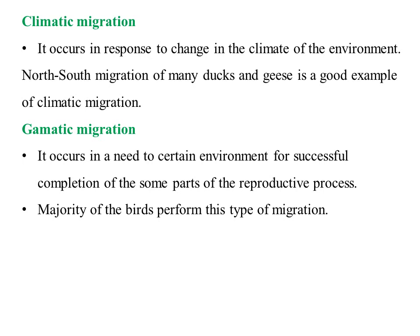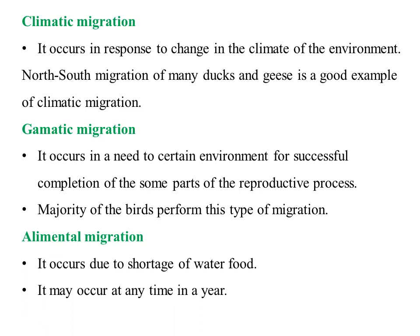The majority of birds perform gametic migration — when the gonads become mature they migrate from their feeding ground to the breeding ground, breed, and return to their feeding ground. In elemental migration, when there is a shortage of food or water, birds migrate to other places in search of food and water. Due to elemental effects they migrate from one place to another — this may occur at any time of year. So we have discussed the migration of birds, their types, and the main causes of migration. Thank you for listening.